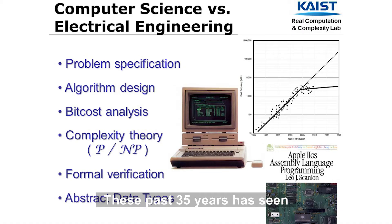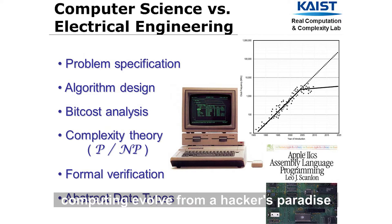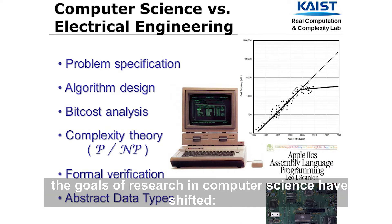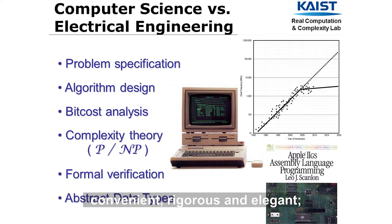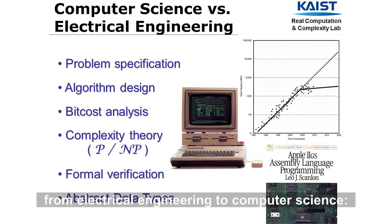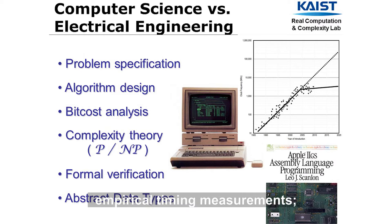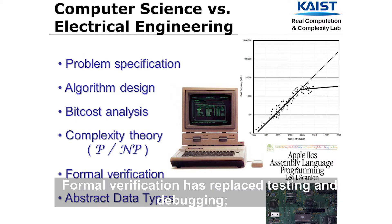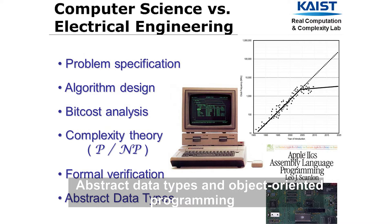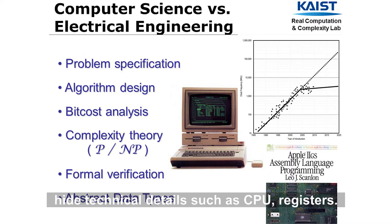These past thirty-five years have seen computing evolve from a hacker's paradise to a scientific discipline. As Moore's law is reaching its limitations, the goals of research in computer science have shifted from faster and bigger to convenient, rigorous, and elegant — from electrical engineering to computer science. The design of algorithms has replaced heuristical hacking. Big-O analysis has replaced empirical timing measurements. Complexity theory allows us to mathematically prove algorithms optimal. Formal verification has replaced testing and debugging. Abstract data types and object-oriented programming hide technical details such as CPU registers.